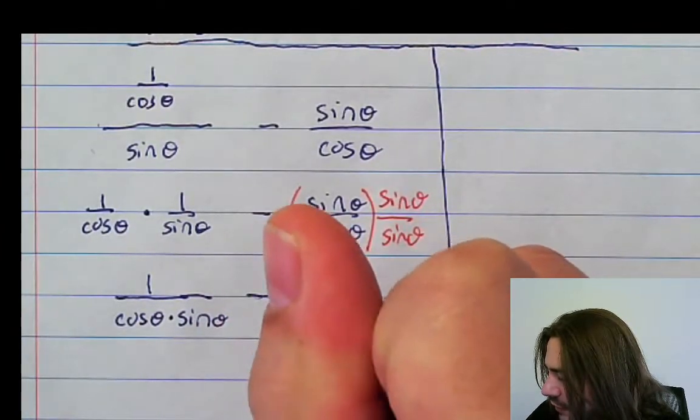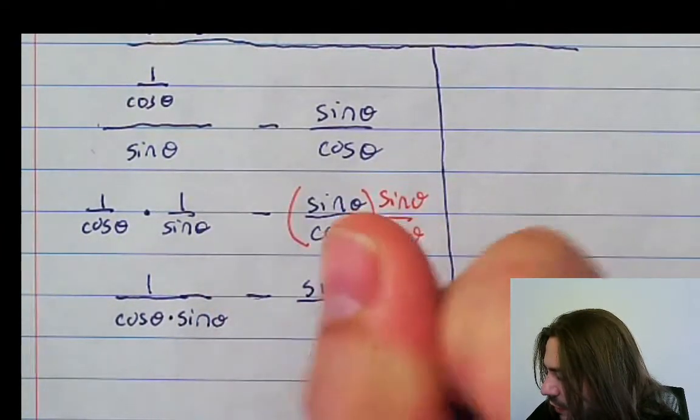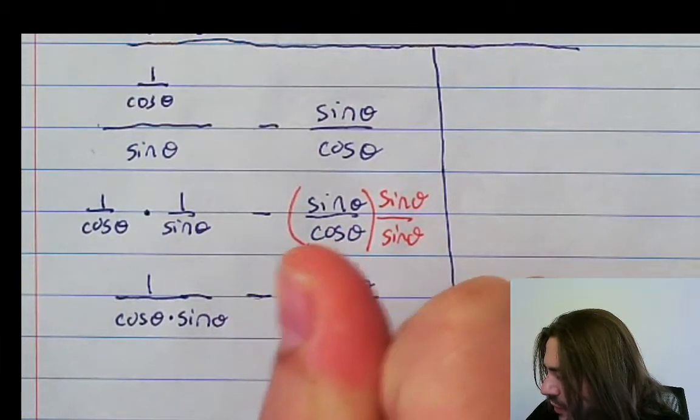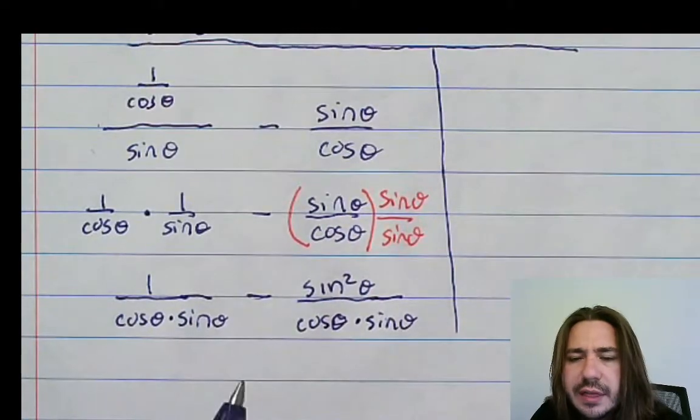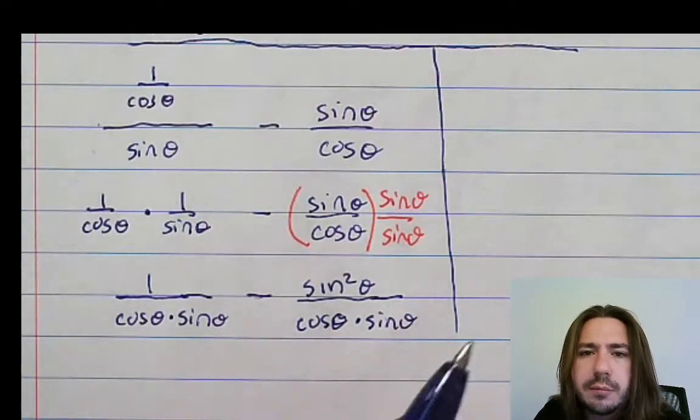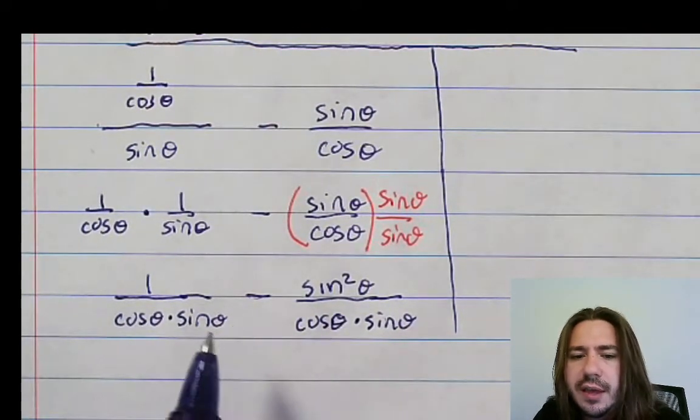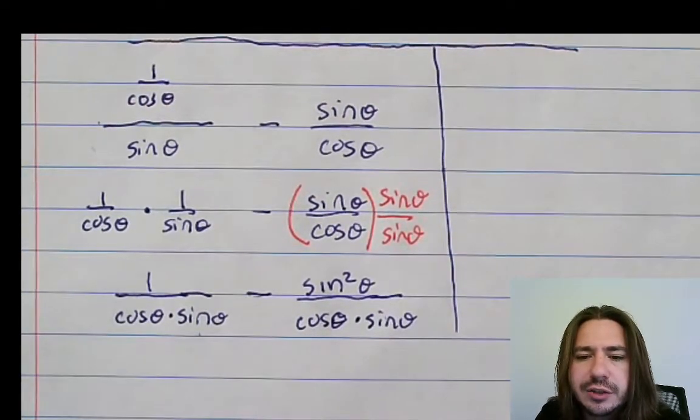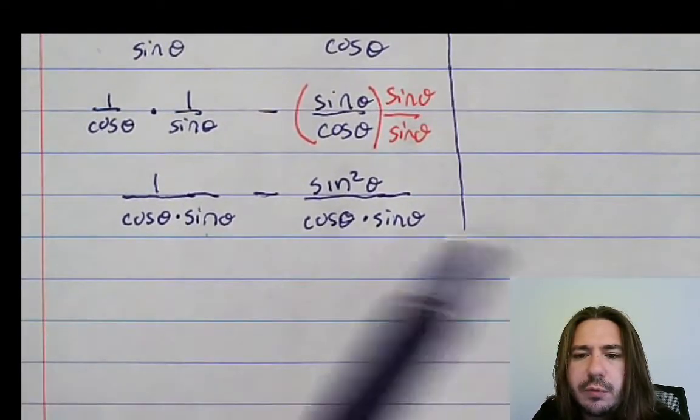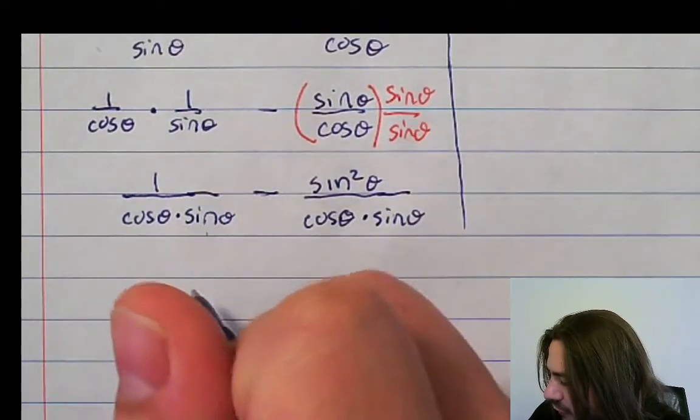Sine theta times sine theta is sine squared theta. And then we've got the cosine times sine. So now we've got a common denominator. So you might notice that as a theme on a lot of these proof problems involving fractions is, you want to be comfortable finding that common denominator any time you add or subtract fractions.